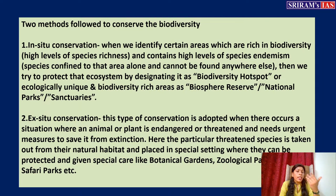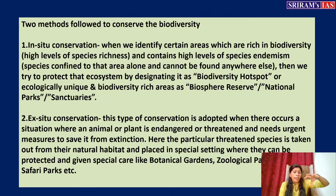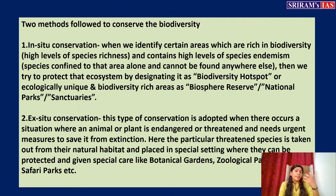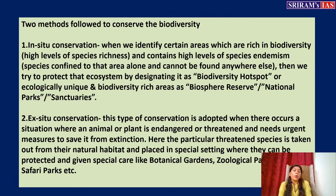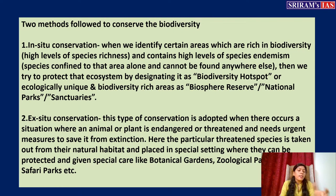There are two types of conservation. In-situ conservation protects species in their native habitat — for example, through national parks and wildlife sanctuaries. Ex-situ conservation removes threatened species from the wild to protect them in captivity — for example, re-wilding red pandas in zoological parks. Ex-situ facilities include botanical gardens, zoological parks, and wildlife safaris.